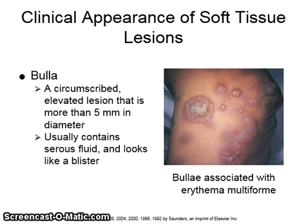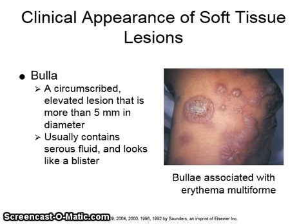We will begin by describing the clinical appearance of soft tissue lesions. A bulla is a circumscribed elevated lesion that is greater than five millimeters in diameter. It usually contains serous fluid and looks like a blister. The picture on the right shows the bullae associated with erythema multiforme. Bulla is the singular term; bullae is the plural form.